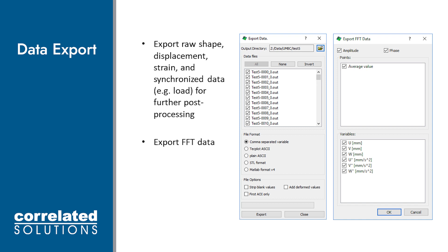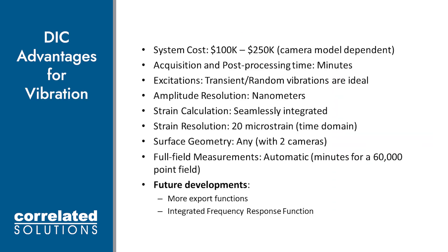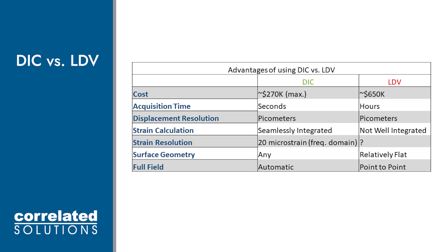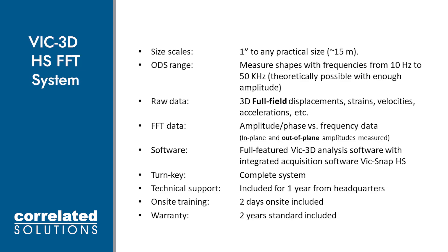So depending on the cameras we're using, we can get the system costs down to about $100,000. That should get us about 2500 frames per second and about 1000 Hz. Post-processing will be fairly quick, and the strain resolution is about 20 microstrain. Surface geometry usually poses no issues as long as both cameras get enough pixels across the speckle pattern, and we get a ton of data points — it's all full field. This slide also helps to summarize some of the more noteworthy aspects of the VIC-3D High Speed FFT system. We want to sell it as a turnkey system so you'll get all the software and hardware that you need right out of the box. We come onsite to perform a two-day training seminar and also include one year of support with the system. Additionally, all the hardware has a two-year warranty.